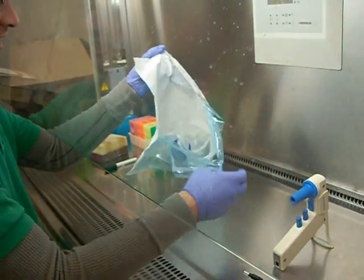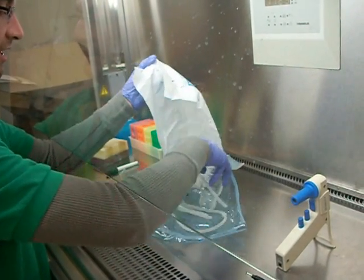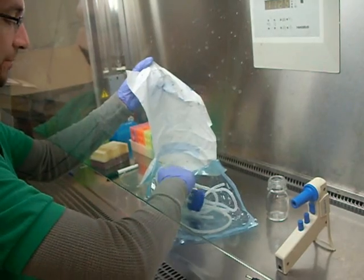Now we're just going to take the tubing out of the autoclave bag, the reservoir, and connect it to the pulse dampener.